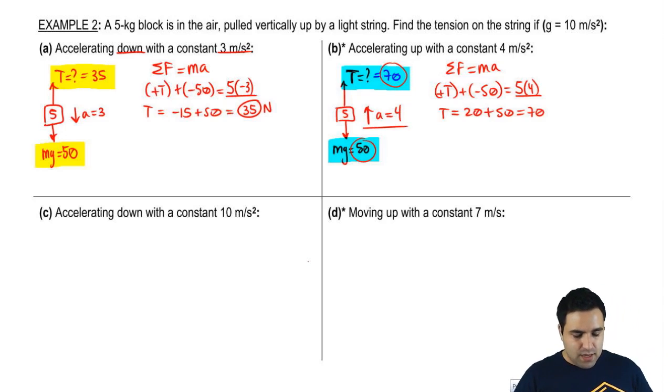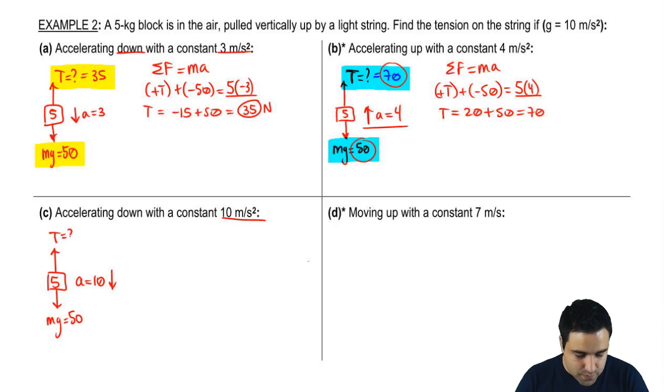All right. So let's do two more here. You're accelerating down with a constant 10 meters per second squared. I'm going to do this one. I want you guys to try out the next one. So your mg here is 50. And your acceleration is 10 down. And I want to know what is the tension. So sum of all forces equals ma. The forces are tension up, 50 down. Mass is 5. And the acceleration is 10.